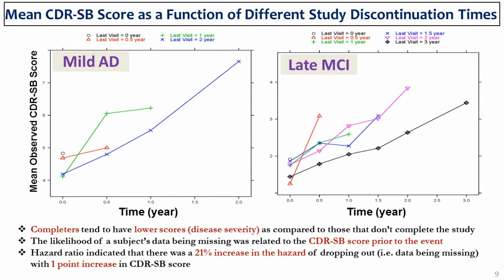As part of the dropout analysis, it was found that completers tend to have lower scores as compared to those that don't complete the study. This was confirmed by the dropout model, which suggested that the likelihood of a subject's data being missing was related to the CDRSB score prior to the event of dropping out.